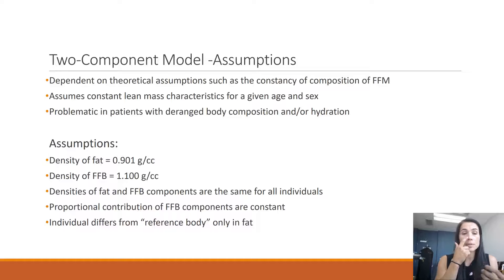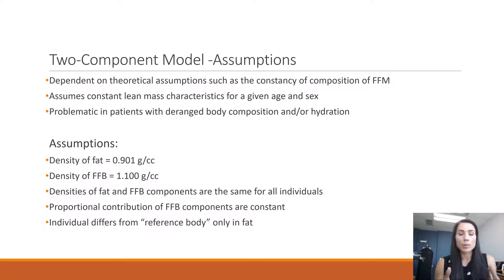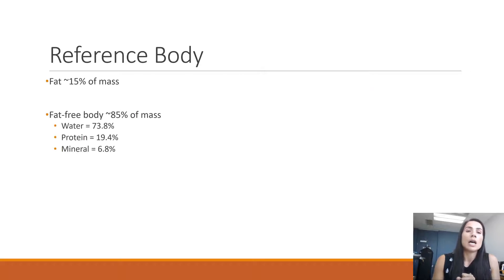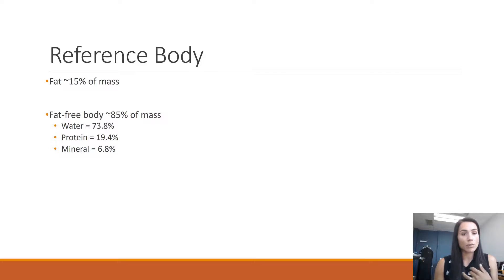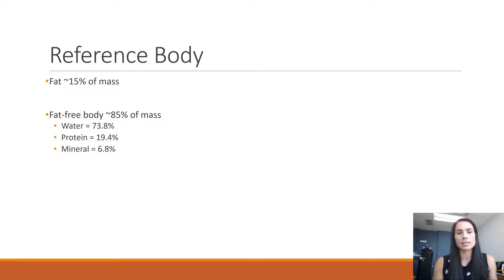The model also assumes that individuals only differ in their reference body in fat — so fat will vary per person, but the fat-free body is assumed to be exactly the same. That reference fat-free body in the two-component model assumes every person's fat-free body is made up of 73.8% water, 19.4% protein, and 6.8% mineral. And obviously that's not the case.